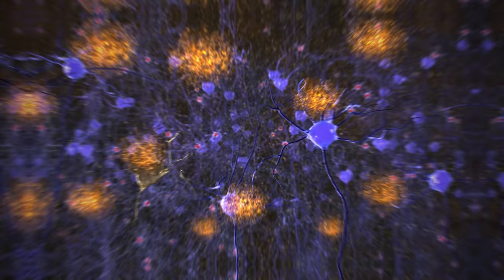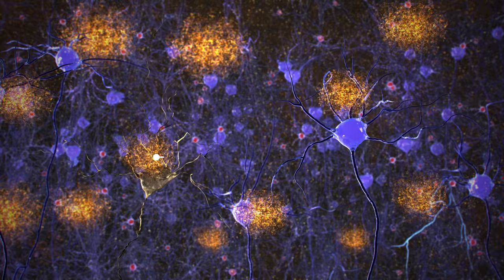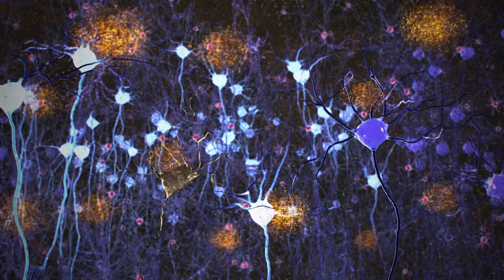When the gamma flickering light treatment was used in older Alzheimer's mice with toxic levels of amyloid beta, which results in aggregates called plaques, the plaques decreased. However, for the plaque levels to remain low, the flickering light treatment had to be given over several days versus hours.